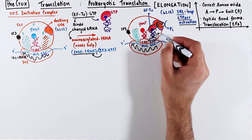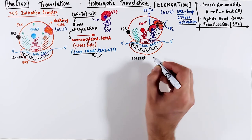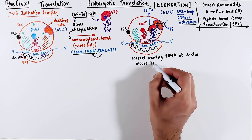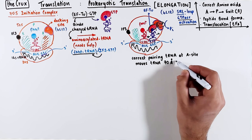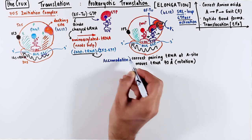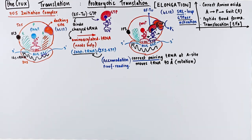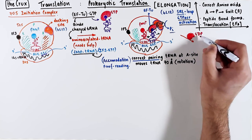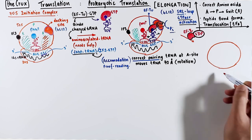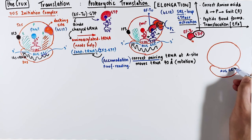Once the correct pairing between the tRNA and the mRNA at the A site is established, the tRNA moves about 70 angstroms towards the P site. This movement is usually a rotation of the tRNA and only happens when there is correct pairing — this is called accommodation, and it acts like a proofreading mechanism. The SRL loop breaks a phosphate bond in the GTP, leaving EF-Tu with a GDP attached, and this EF-Tu-GDP complex has very little affinity towards the 50S docking site and is therefore released.